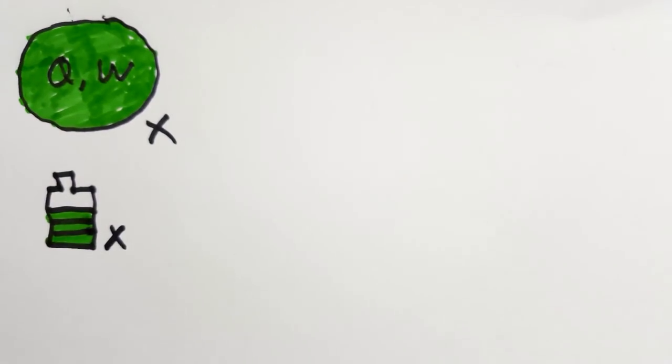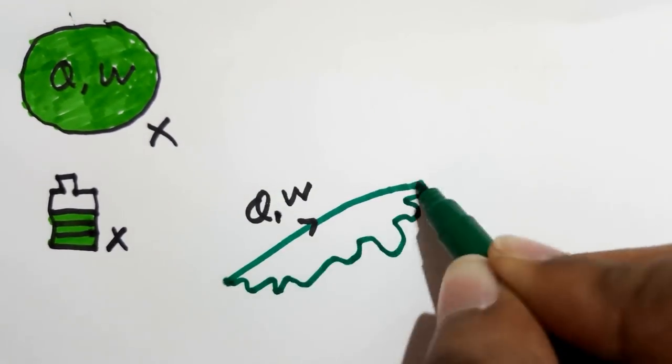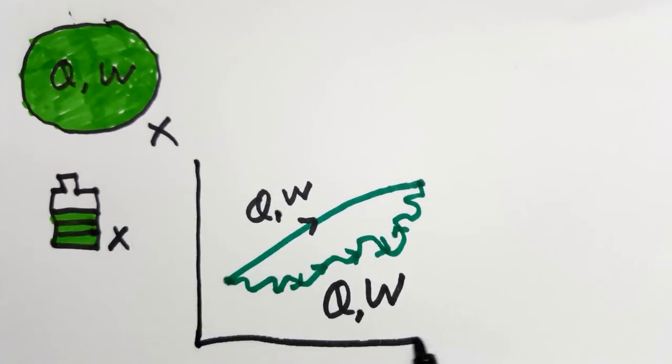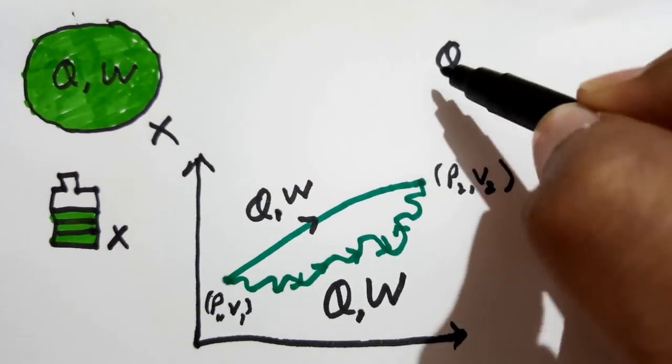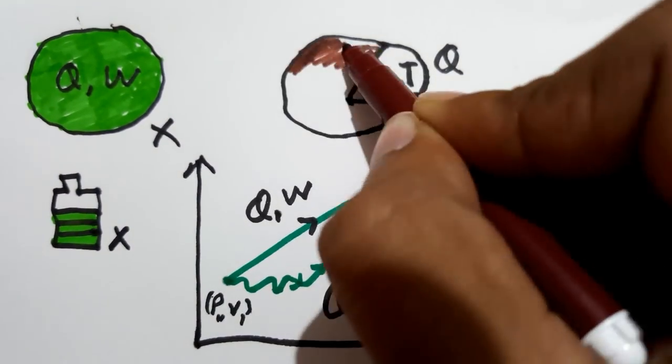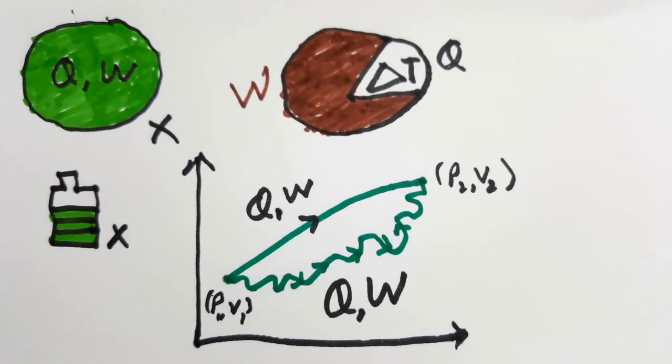That is, the magnitude of heat or work transfer depends upon the path that system follows during the change of state. Heat transfer is the energy transfer due to temperature difference only. All other energy transfers can be termed as work transfer.